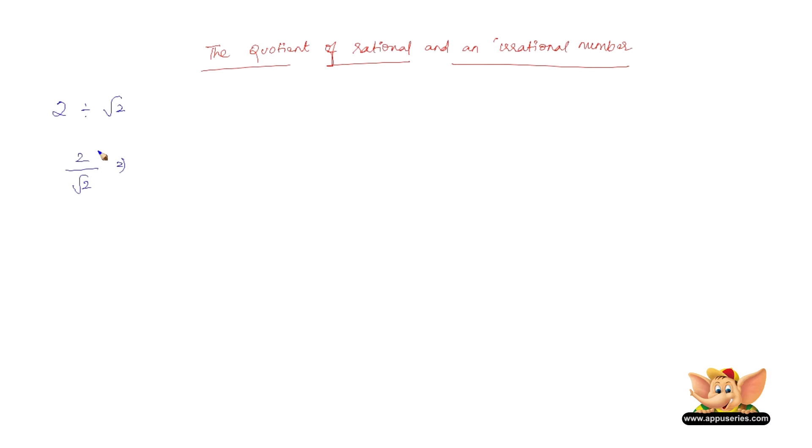The best way of writing this is we can write 2 as root 2 into root 2 divided by root 2. Therefore, root 2 root 2 gets cancelled, the answer is root 2.